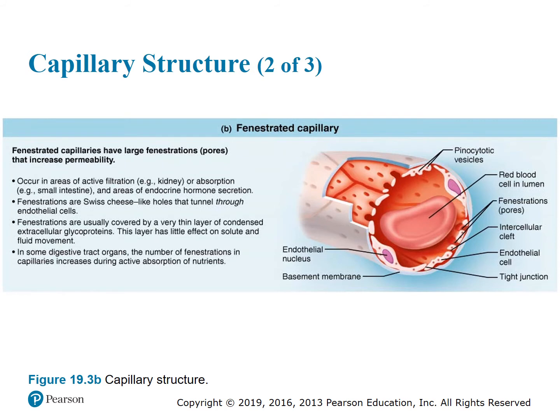Figure 19.3b shows the fenestrated capillary. They have large pores that increase permeability, occurring in areas of active filtration like the kidneys, absorption like the small intestine, and areas of endocrine hormone secretion. Fenestrations are holes that tunnel through endothelial cells, usually covered by a very thin layer of condensed extracellular glycoproteins that has little effect on solute and fluid flow. In some digestive tract organs, the number of fenestrations increases during active absorption of nutrients.